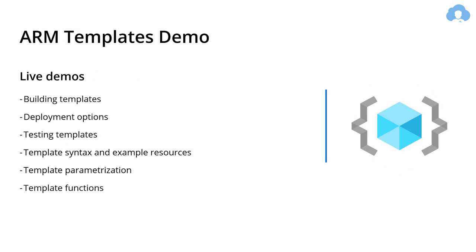Here's the demo I prepared. We're going to start with building templates using Visual Studio Code, and I'll show you what resources are available to learn what properties you need to supply for each resource. I'll show you all the options for deployment starting from PowerShell, through CLI, CloudShell, GitHub, and the portal. I'm going to finish off by showing you how to parameterize your templates using parameters, variables, and functions. Let's go into the portal.